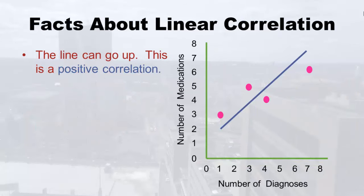Let's talk about facts about linear correlation. Things can be linearly correlated without being perfectly on the line. If when you make your scattergram, you imagine a line going through it, and that line is going up, this is called a positive correlation.